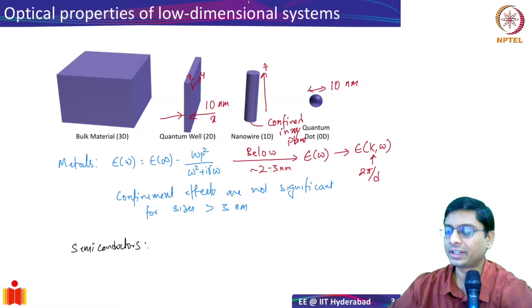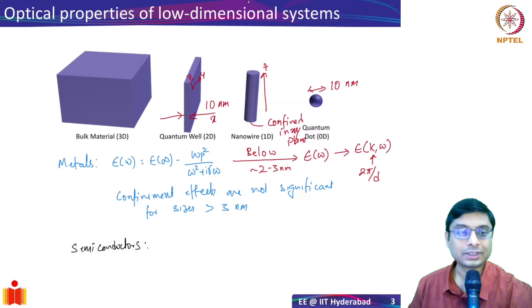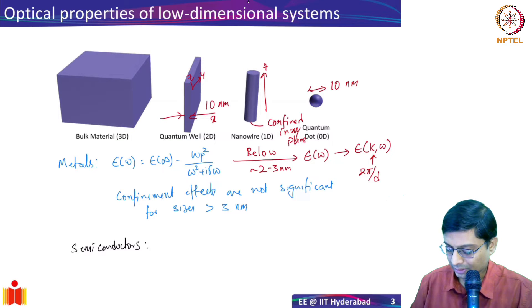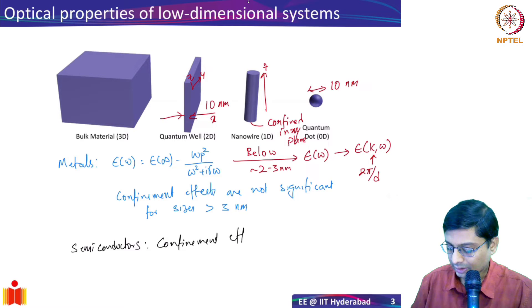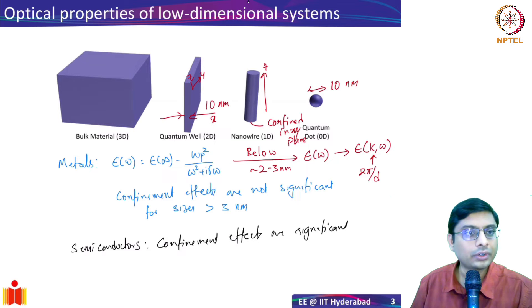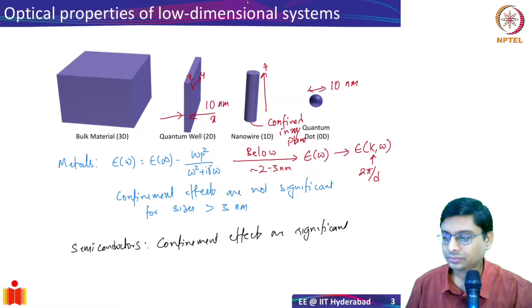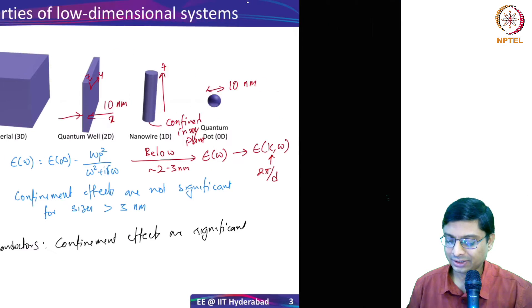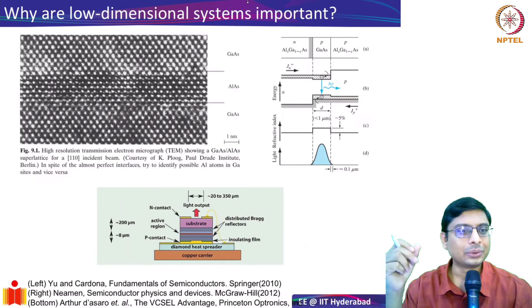For example, if I make a semiconductor quantum well that is 10 nanometers wide, confinement plays a very significant role. So confinement effects are significant for semiconductors — why should we care about them?